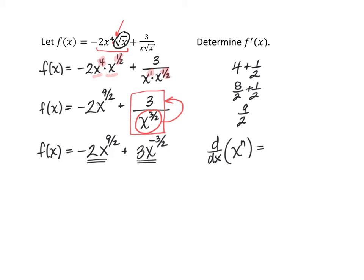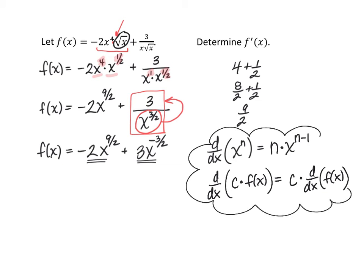The derivative of x^n is n·x^(n-1). We'll utilize the power rule and the constant multiple rule, which says if we have a constant times a function, we can pull that constant out and multiply it by the derivative.